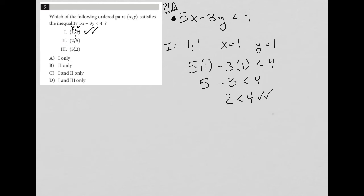So Roman numeral 1 is a good answer. And that automatically means that B cannot be the correct answer because B says only Roman numeral 2 is a good answer.